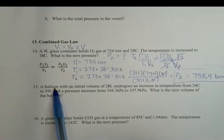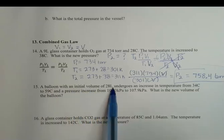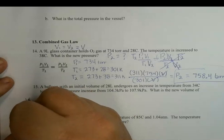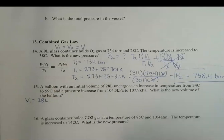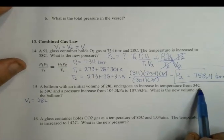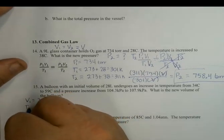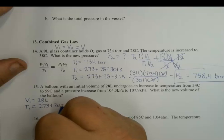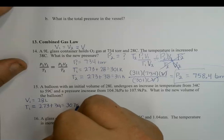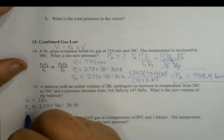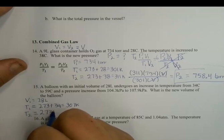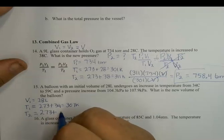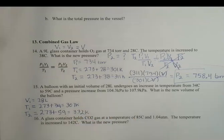A balloon — right away, a balloon can expand or contract so volume is NOT constant. A balloon with an initial volume of 28 L undergoes an increase in temperature: T1 = 273 + 34 = 307 K (from 34°C). T2 = 273 + 59 = 332 K (to 59°C). The pressure increases too, so we have P1, P2, V1, and we're solving for V2 — the new volume.